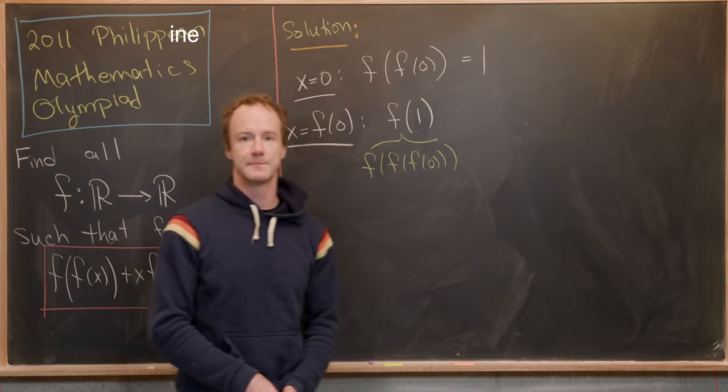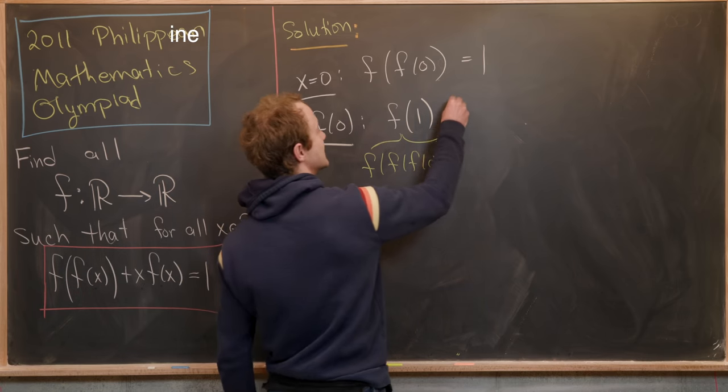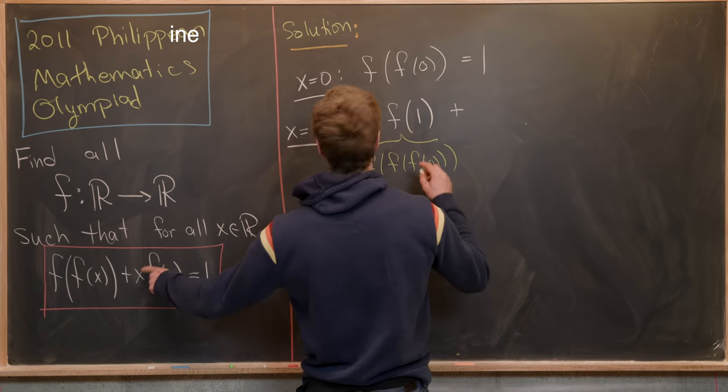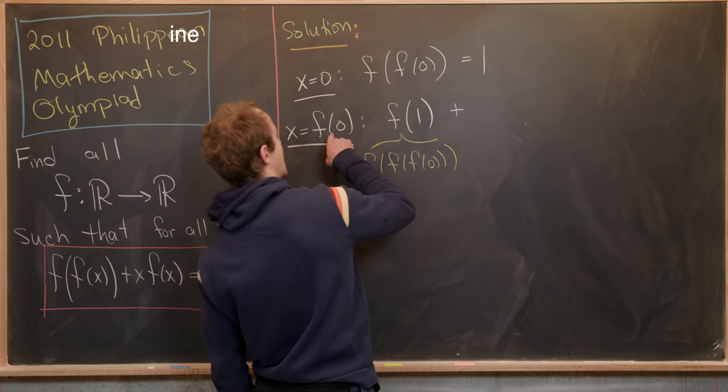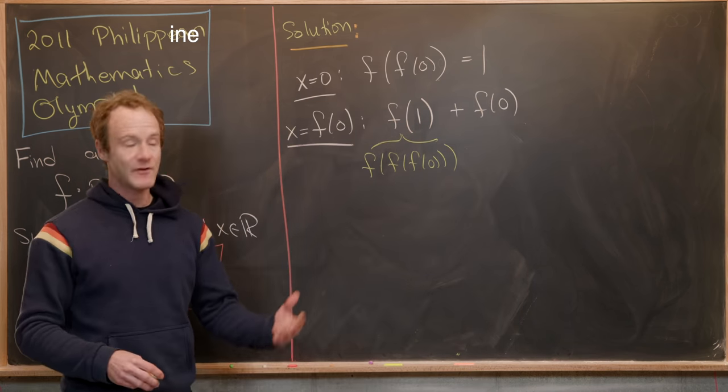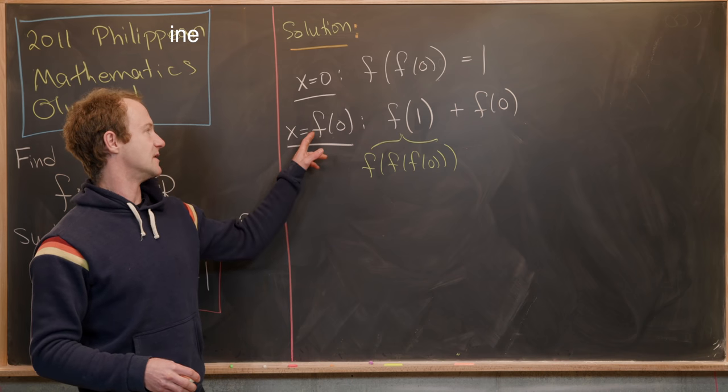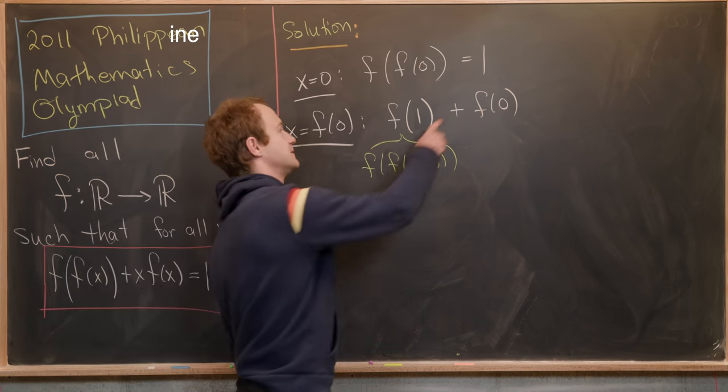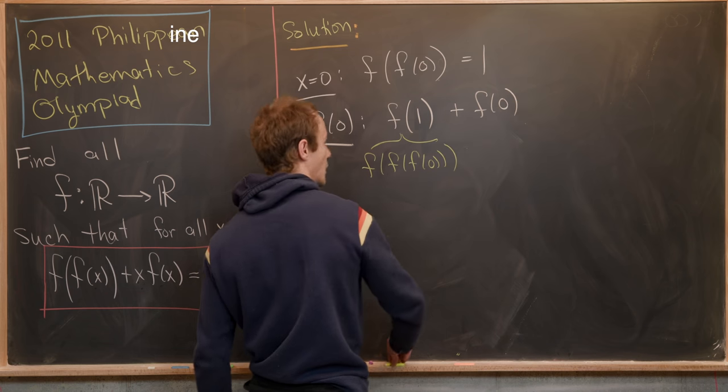And that's the first term right here. Then next, we'll have that this is plus x. In this case, x is f(0) times f(x). But f(x) is going to be f(f(0)). But that's just 1. So we can just write that as times 1.